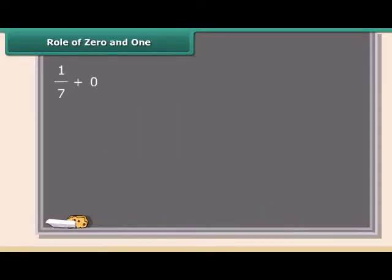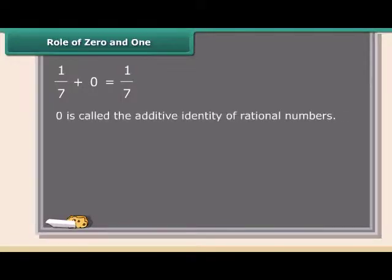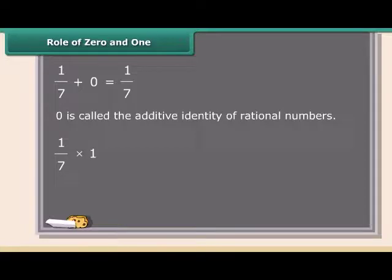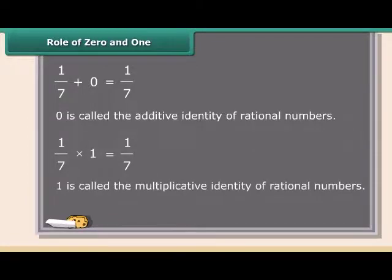When we add 0 to a rational number, the sum is always that same rational number. For this reason, 0 is called the additive identity of rational numbers. When we multiply a rational number by 1, the product is always that same rational number. For this reason, 1 is called the multiplicative identity of rational numbers.